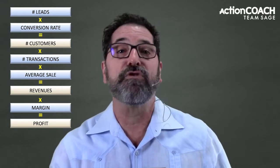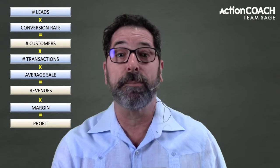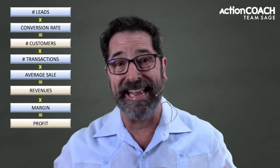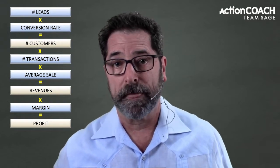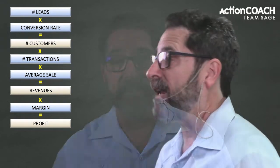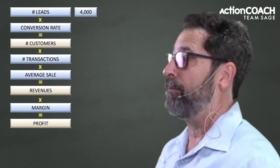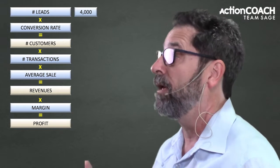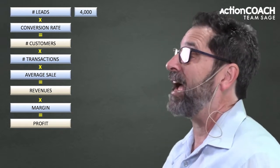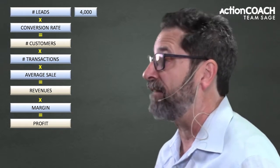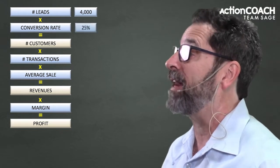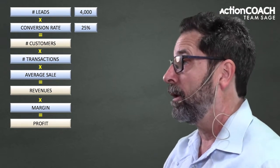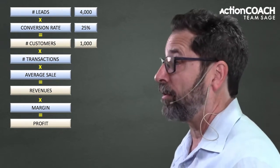You multiply that times your conversion rate — the percentage of people that you talk to that you turn into customers. That gives you your number of customers. As a quick example, let's say 4,000 people said they're interested in my product, and I have a 25% conversion rate. That means 1,000 will become customers.